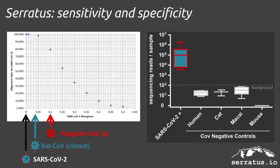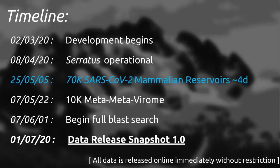Ceratis is an ongoing project. We have completed 70,000 samples making up the mammalian zoonotic reservoir for SARS-CoV-2. Next, we will be doing metaviromics and, ultimately, all SRA RNA-seq libraries. The ultimate output of Ceratis is a database of all novel and known coronavirus sequences in the SRA, with a scheduled release date of July 1st.